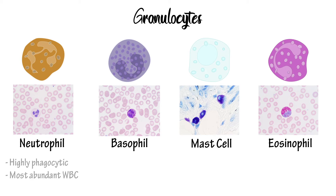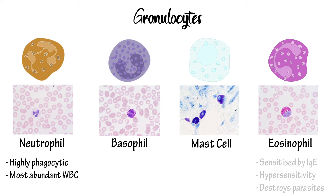Neutrophils are also phagocytic and mainly serve to destroy as much pathogen as possible. They are the most abundant white blood cell. Eosinophils respond when sensitised to threats such as parasites by the antibody IgE, and are also involved in hypersensitivity reactions like allergies.